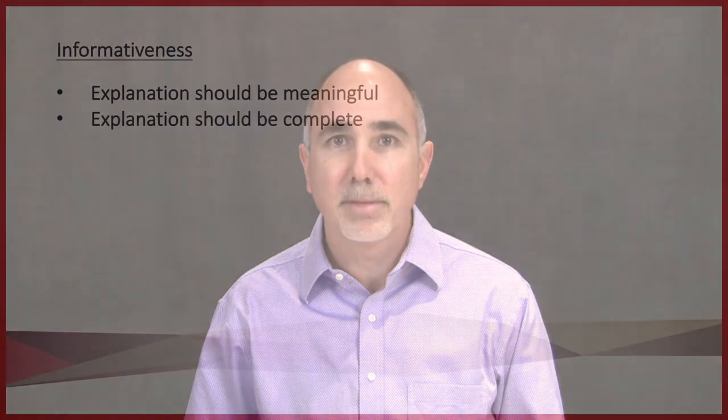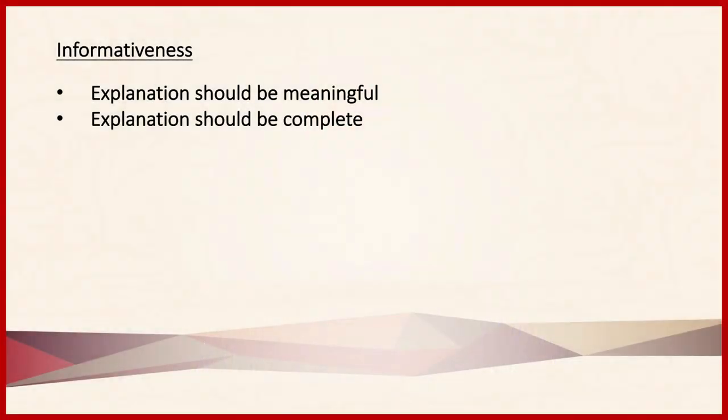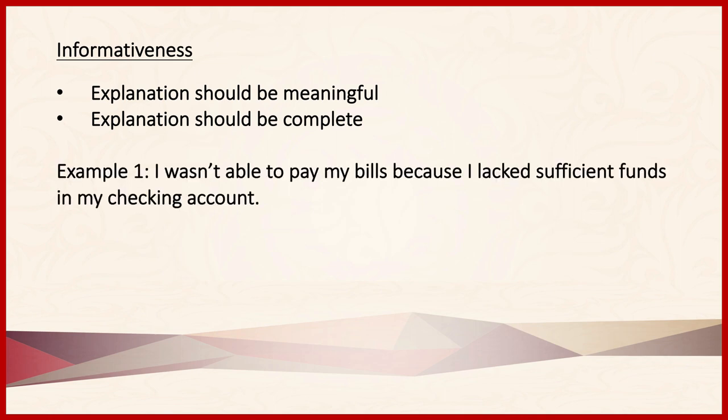We'll start then with informativeness. Remember that informativeness has two parts. To say that an explanation is informative is to say that it is both meaningful and that it is complete. So here would be an example: I wasn't able to pay my bills because I lacked sufficient funds in my checking account.